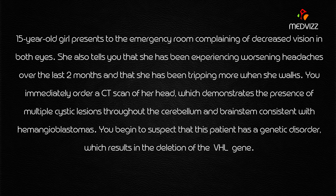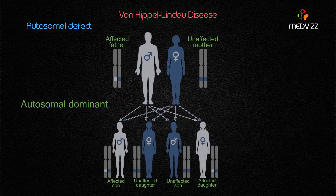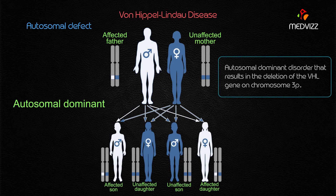Von Hippel-Lindau is an autosomal dominant disorder that results in deletion of the VHL gene. Deletion of the VHL gene is the defect or cause, and it is a tumor suppressor gene located on chromosome 3.